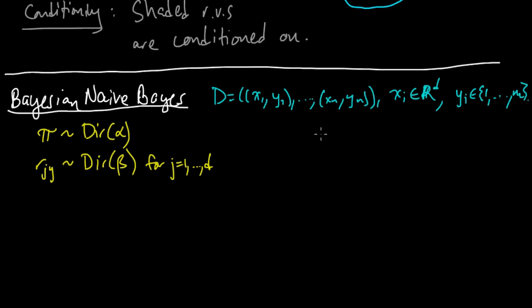One for each of the dimensions, one for each of the features of x, and for all y in 1 to m. And these were defining the conditional distributions for x_j, given that y equals that value of y. So each of these was a conditional distribution, and this was a distribution on the classes.